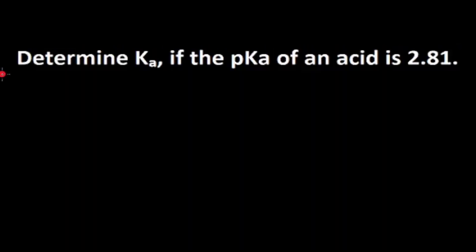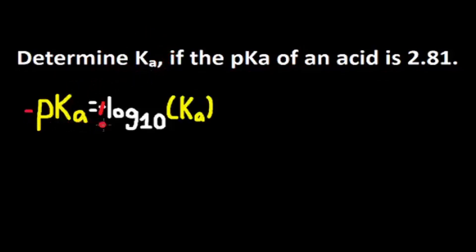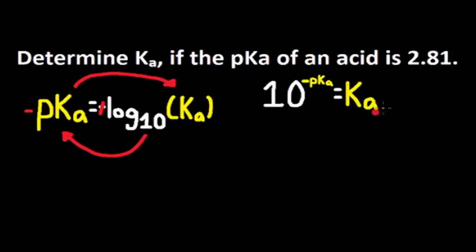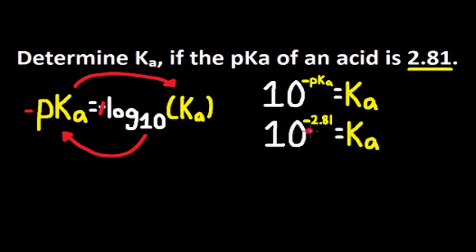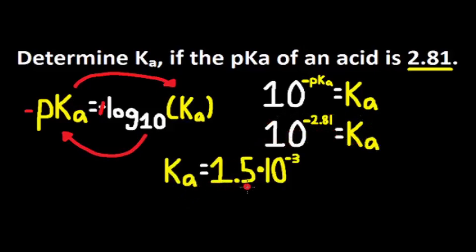Let's try this problem. Determine Ka if the pKa of an acid is 2.81. We can get Ka from the pKa formula. Remember that pKa is equal to the negative log of Ka. We move the negative to the other side — since the base is assumed to be 10, we get 10 to negative pKa is equal to Ka. Plugging in pKa = 2.81, we get 10 to the negative 2.81 is equal to Ka. Do this in your calculator and you get Ka is equal to 1.5 times 10 to the negative 3. We have two decimal numbers from pKa, so that means we have two sig digs.